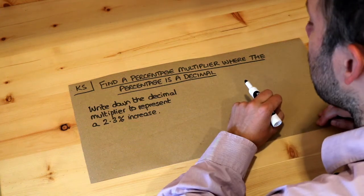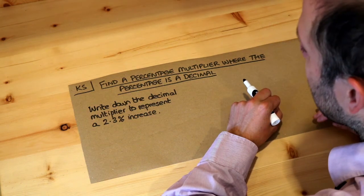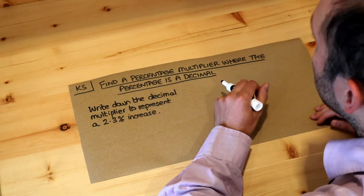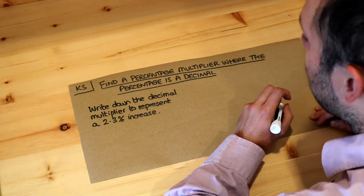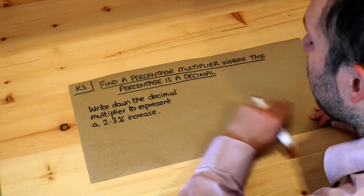In the previous video we saw how we can represent finding a percentage of a number or percentage change as multiplying by a particular number, and we call that number a decimal multiplier.